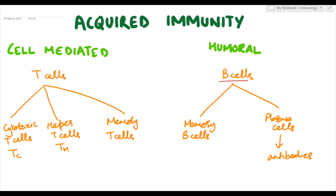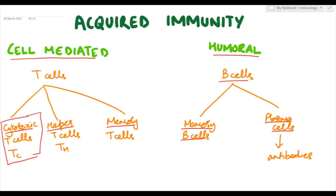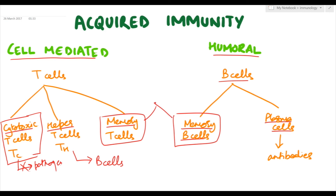Now, coming to acquired immunity, there are two types: cell-mediated immunity and humoral immunity. Cell-mediated immunity consists of T cells, which mature into three types: cytotoxic, helper, and memory T cells. Humoral immunity consists of B cells or B lymphocytes, which mature into memory B cells and plasma cells. Cytotoxic T cells kill the pathogen directly by various mechanisms, while helper T cells help in activation of B cells. Memory T cells and memory B cells both help in keeping the memory of the pathogen.